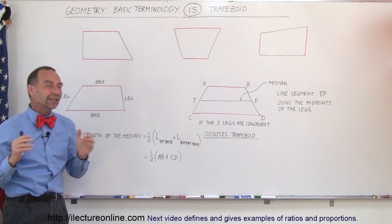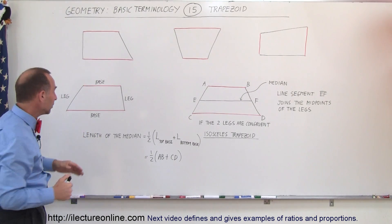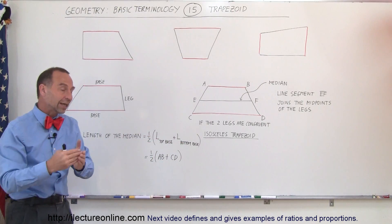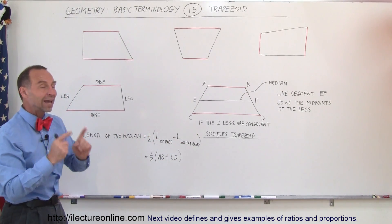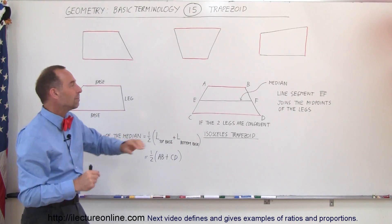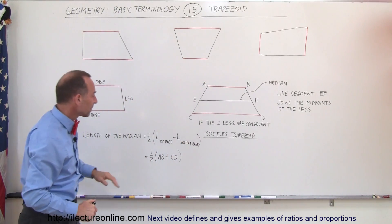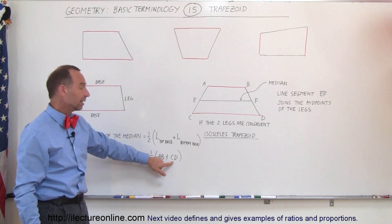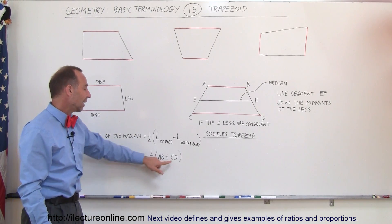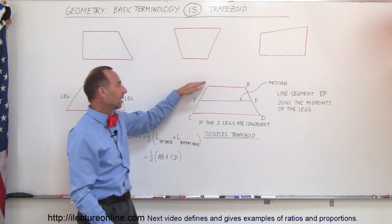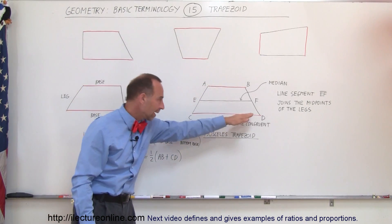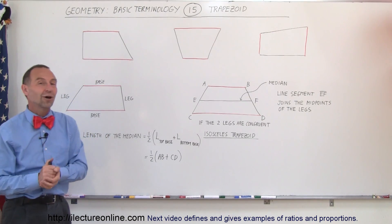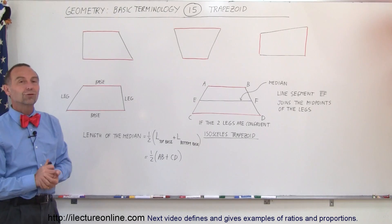To find the length of the median, we take the length of the top base and the length of the bottom base, add them together, and divide by two. Another way to write it is one half times the sum of the length of line segment AB and the length of line segment CD. Adding the two base lengths and dividing by two gives us the length of the median — a special property of this quadrilateral called the trapezoid.